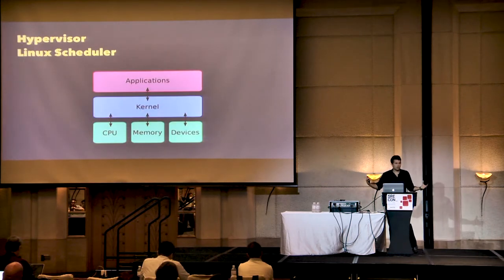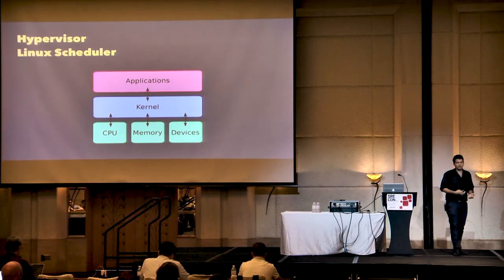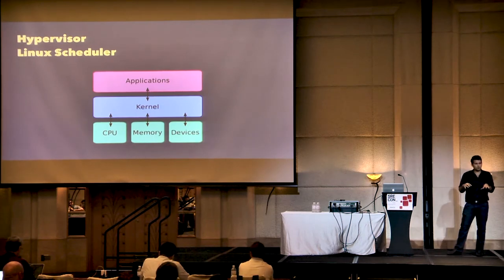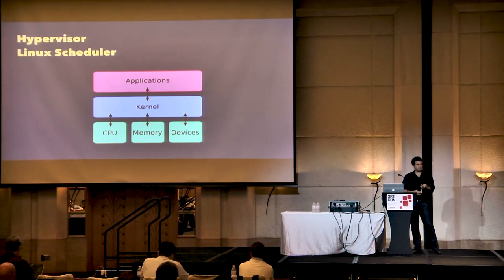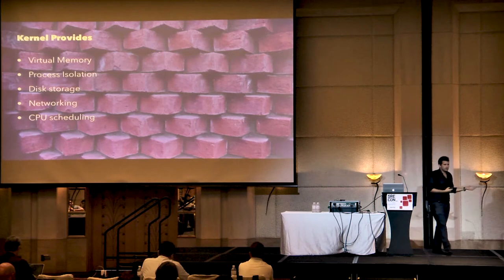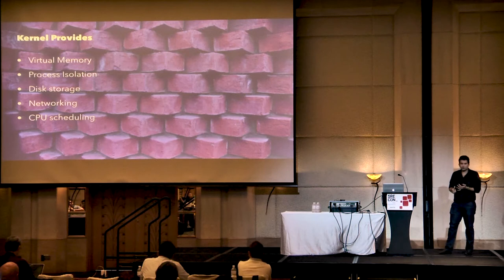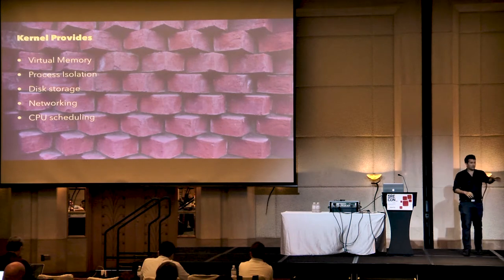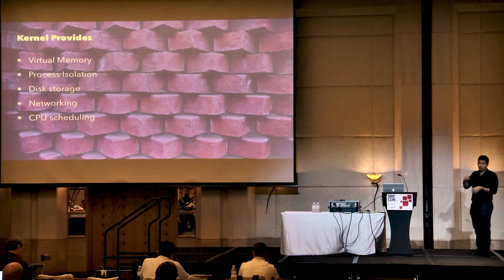If we want to scale up a little bit more, we talk about a multi-process system — we talk about Linux. When you're a cloud host or your hypervisors run Linux, Linux gives you multiple processes through a scheduler. What is a scheduler actually providing in Linux? It gives you things like virtual memory, process isolation, disk storage, network, and CPU isolation — guarantees that multiple processes can run at the same time and that no single process can take over the entire machine.